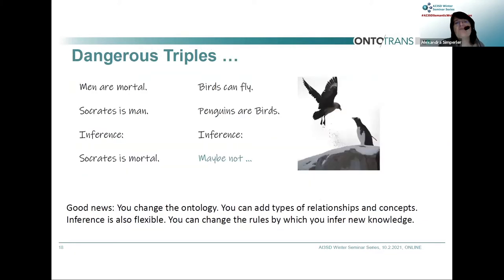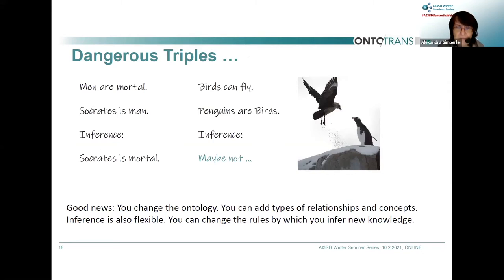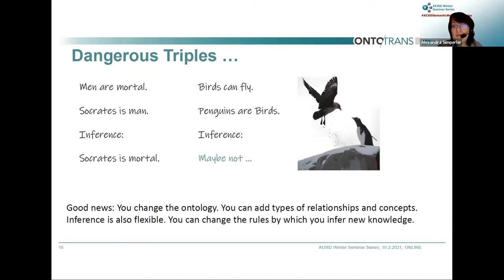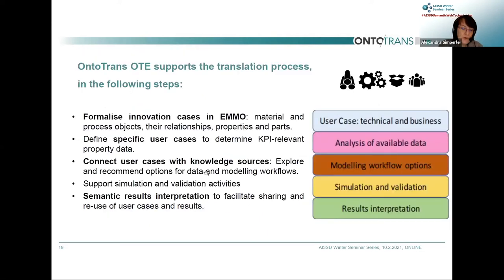Some triples can be dangerous. The classic example: men are mortal, Socrates is a man, therefore Socrates is mortal. The danger is if I say birds can fly and then claim a penguin is a bird — perhaps we should not infer that. We have first-order logic here, but there are other orders of logic. The beauty is you can change the ontology, add types of relationships and context — inference is flexible. But you should not overdo it, because you can search and infer yourself to death.